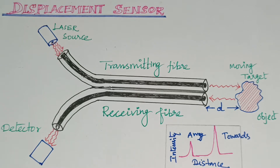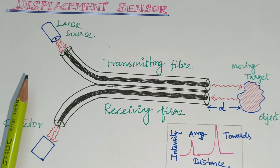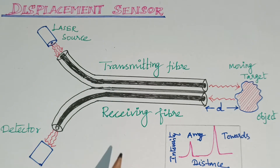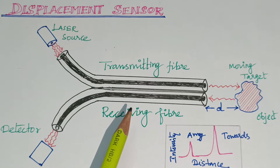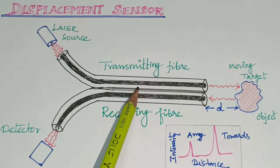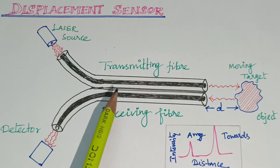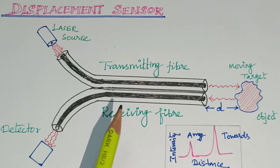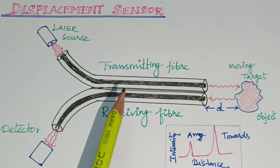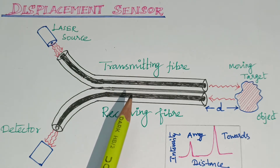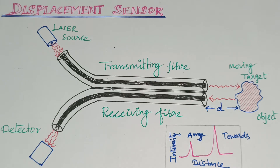Construction: Here, we are using a Laser Source. The Laser Source uses two types of Fibers — a Bundle of Transmitted Fiber and a Bundle of Receiving Fiber. The axis of the Transmitted Fiber and the Receiving Fiber can be adjusted relative to the Moving Target to optimize target detection.